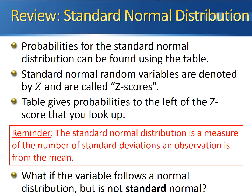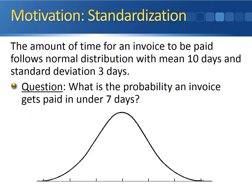Consider this example. The amount of time for an invoice to be paid follows a normal distribution with a mean of ten days and a standard deviation of three days. Notice we have a normal distribution, but it's not standard normal because the mean is not zero and the standard deviation is not one. We want to know what is the probability that an invoice gets paid in under seven days.